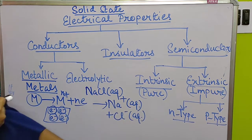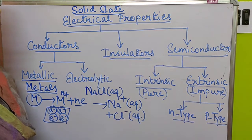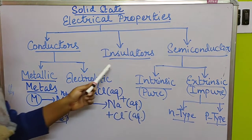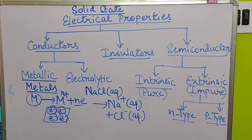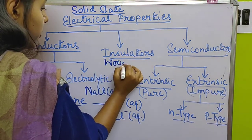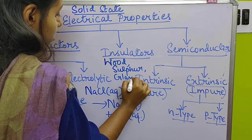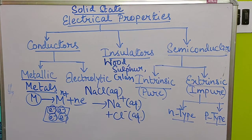Next is insulator. Insulators are substances which cannot conduct electricity. They have no free particles in them, or even if free particles are present, some barrier prevents them from conducting electricity. Examples are wood, sulphur, glass, and plastic. These are all examples of insulators.